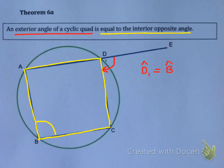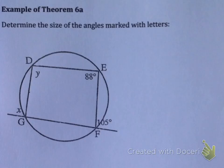So this theorem says: if you have a cyclic quad, the exterior angle D1 must equal angle B. And when we use this theorem, the reason we're going to use is 'exterior angle of cyclic quad.' So let's have a look at an example.